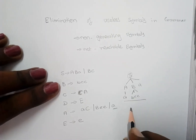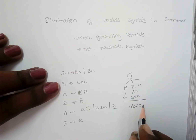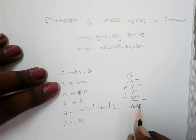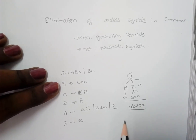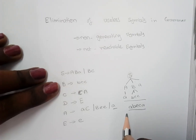As a whole, the input derived is a, b, c, c, and a. So it derives to some set of terminal symbols, and this is called a generating symbol.